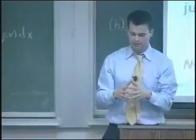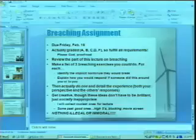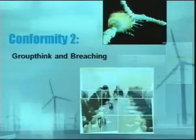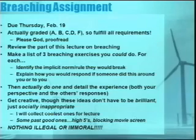As you were guessing, you have an assignment, a breaching assignment. It'll be due February 19th. We actually created a grading system, so please fulfill all requirements. Also, some of the papers you turn in, they're a little messy, so please proofread this paper. Review the parts of this lecture on breaching, and here's the way the assignment works. Make a list of three breaching exercises that you could do. For each one, identify the norm or rule that the breach would break. Explain how you would respond if someone did this around you, could be just a few sentences. And this is the fun part: actually do one of them and detail the experience, both your perspective on how it went and the other person's perspective. So you understand this: three breaches, explain what they are, identify the norm, explain how you would react if this happened, and you go do one and say what happens and the way that people react and how you felt.